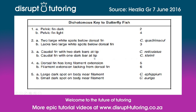This is the dichotomous key to the butterfly fish. It tells us the identifying features that we can use to classify different fish into different species groups. For example, if we look at 5a, if a fish has a large dark spot on the body near the filament, that probably belongs to C. ephippium — but we'll see a little bit more about that in a moment.